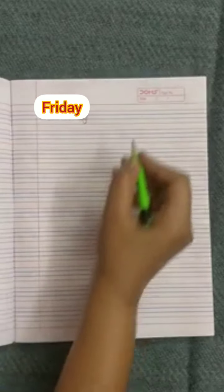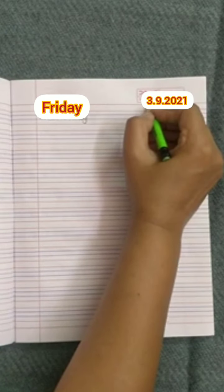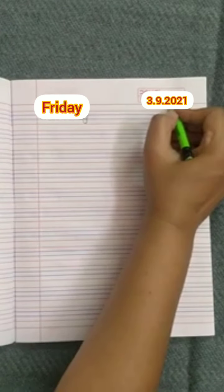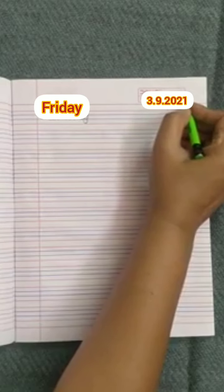Now, on the right corner, write down today's date: 3.9.2021.